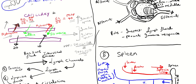Now there's a second force called the oncotic force, and this pulls the fluid in. It's determined by the albumin or protein content. So you have fluid being pushed out by hydrostatic force and fluid being pulled in by oncotic force. Here, 70 mmHg is pushing fluid out, and 50 mmHg of oncotic pressure is pulling it in — so there's a net movement of 20 mmHg pushing fluid out.